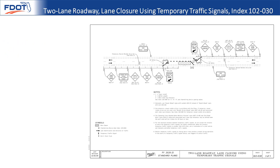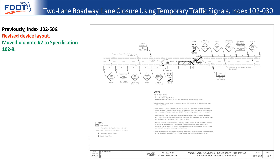Index 102-030, the two-lane roadway lane closure using temporary traffic signals, was previously index 102-606. Note number two has been moved to specification 102-9. That note was mostly concerned with receiving approval from the district traffic operations engineer for changes to the signal timing, and it has been more or less retained as it had previously been shown in the index.